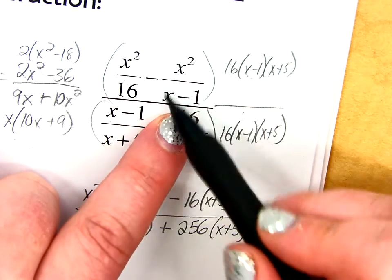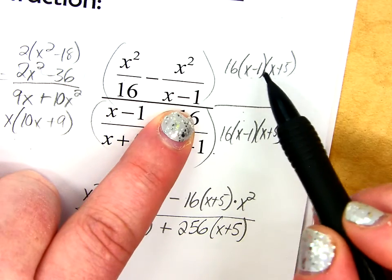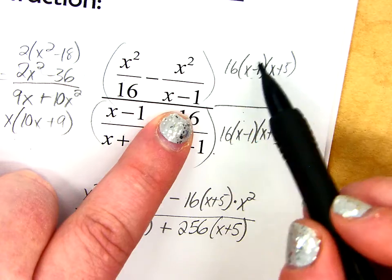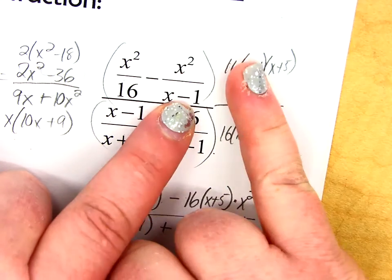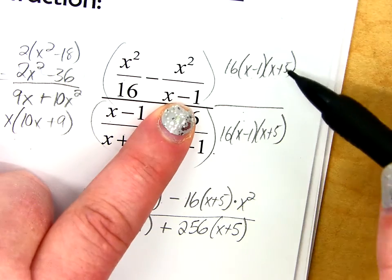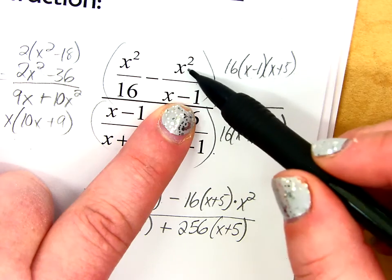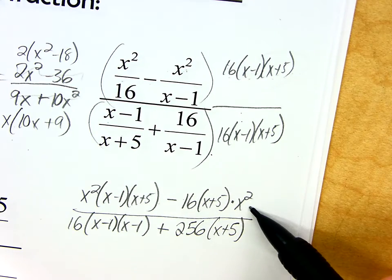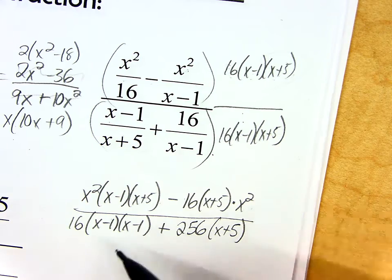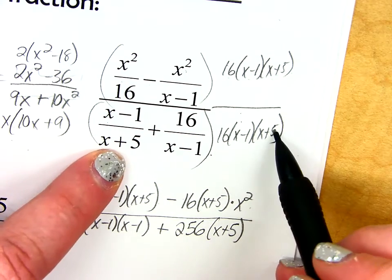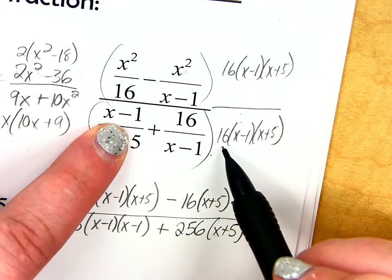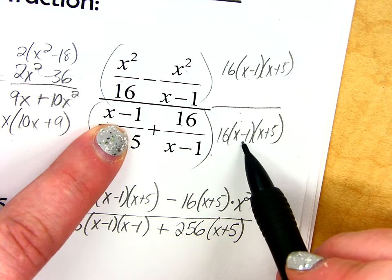Then, I have minus. Now, I have to do this fraction times this. So, when I divide, the x minus 1s are going to cancel out. So, then I'll just have 16 times x plus 5 times that x squared. So, that's what I have here. And then, I do the same thing in the denominator.